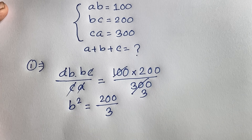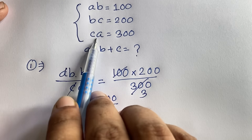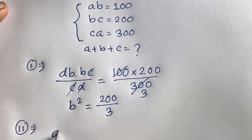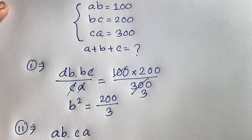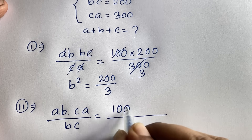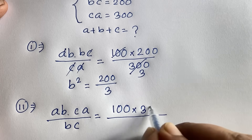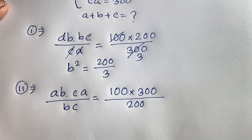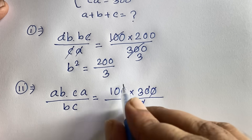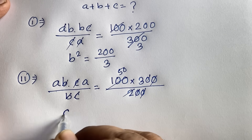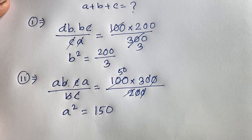Again, step 2: I multiply the first equation and third equation, and divide by the second equation. So I can say it will be 100 times 300 divided by 200. Then the zeros cancel and 100 divided by 2 gives 50. C cancels and B cancels, and we find out here is A squared is equal to 150.